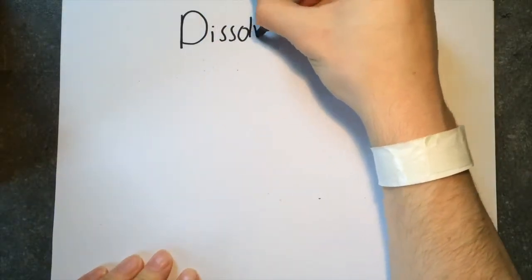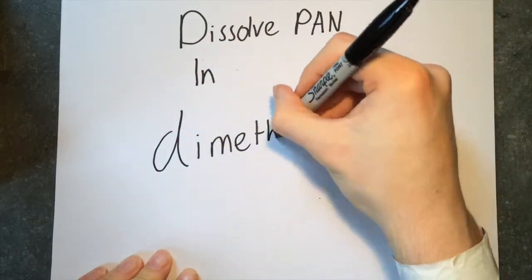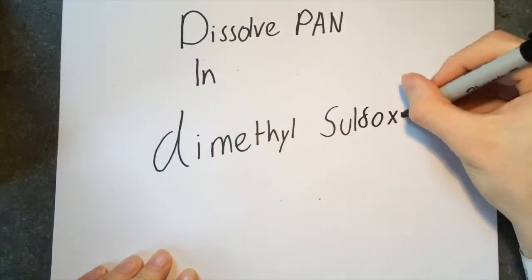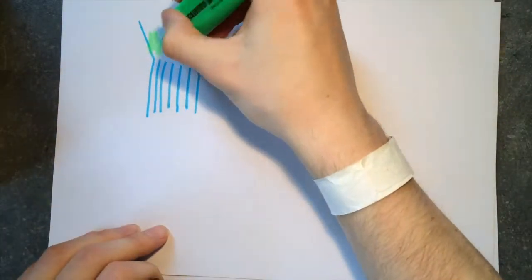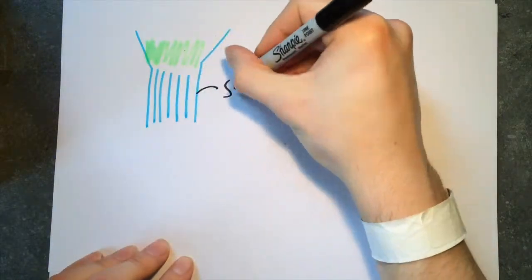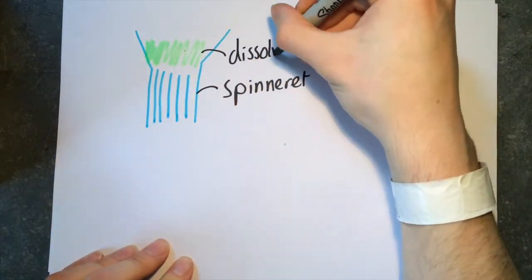After polymerization has occurred, the PAN is dried then dissolved in an organic solvent. Dimethyl sulfoxide is commonly used. Organic solvents are used to avoid contamination from metal ions. These metal ions will become problematic during the high temperature oxidation, ruining the finished fiber.